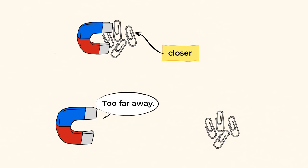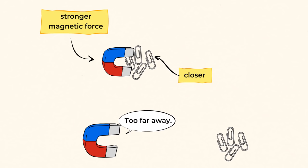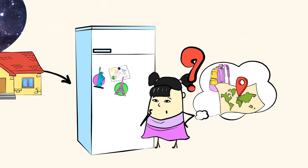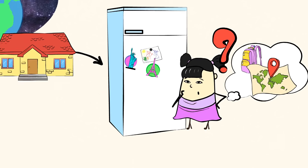But the closer the objects are to the magnet, the stronger the magnetic force is. This is why your magnets stay on the refrigerator door and don't fall off.